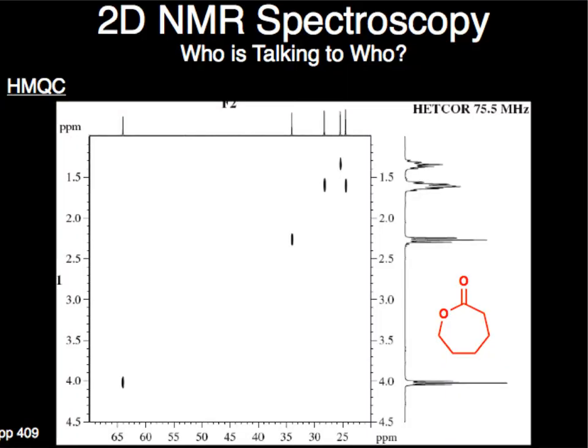This is the same example we had before. So this is that HETCOR. So before we had it as proton-proton. Now we have the carbon on the x-axis, the proton on the y. But again, what you're doing here is you're saying, okay, this hydrogen, the hydrogens on this carbon are on, the hydrogens here are on this carbon, and they're also on this carbon. So again, it's cluing me into, when I look at this, I don't know. Is that one type of hydrogen? Is that two types of hydrogen? It's hard to know sometimes. And so this has helped me clue into that type of thing.